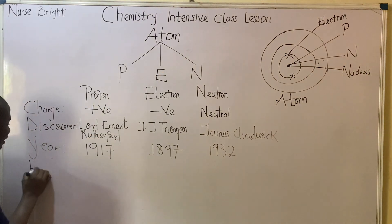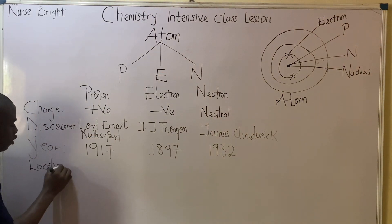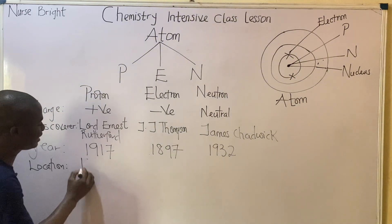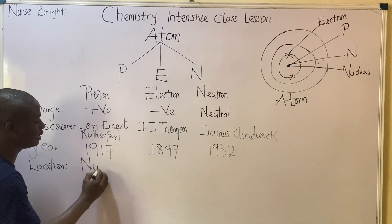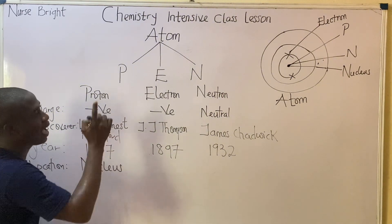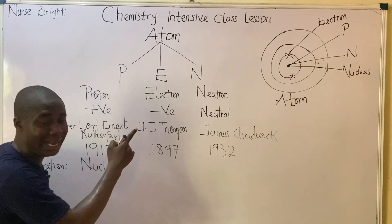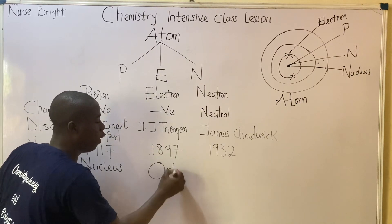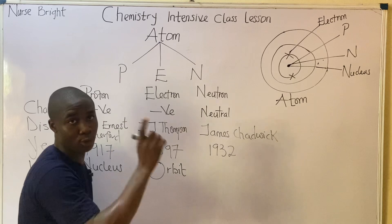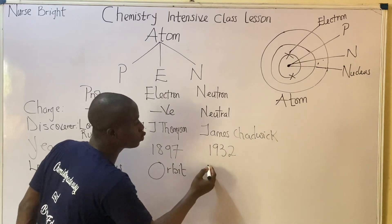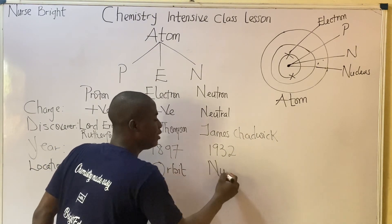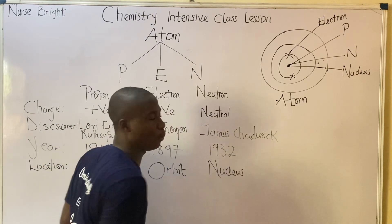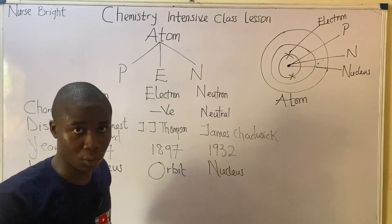For their locations: protons are found in the nucleus of an atom, electrons are found in the orbits, and neutrons are also found inside the nucleus of an atom. All these must be noted.